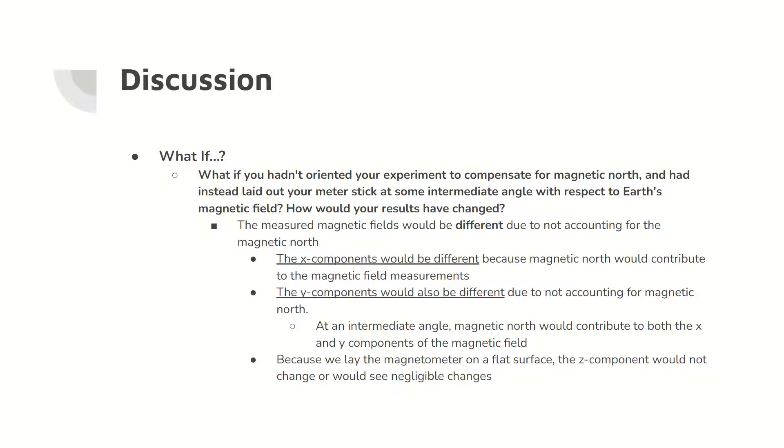If magnetic north was not compensated for, the measured magnetic fields would differ wildly from the magnetic fields with compensation. Both the x component and y component of the magnetic field would differ, as magnetic north would influence both axes depending on the orientation of the magnetometer.